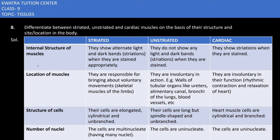How does the structure look like for striated muscles? They show alternate light and dark bands. When you stain them — put a chemical on them — you will see that one band is dark, the other is light, then dark, then light. So we say striated type.